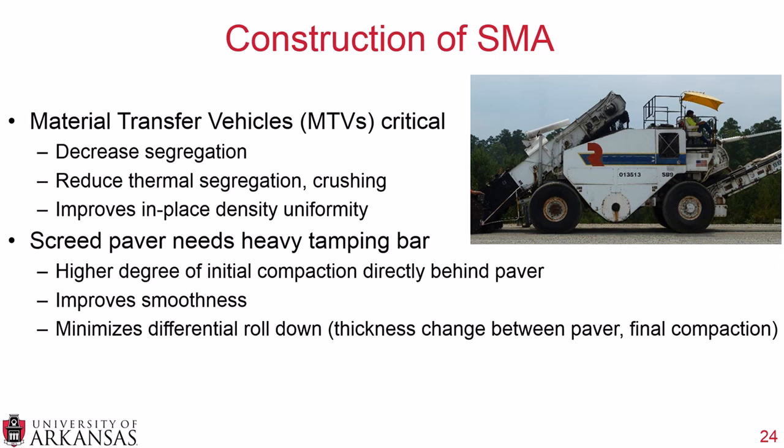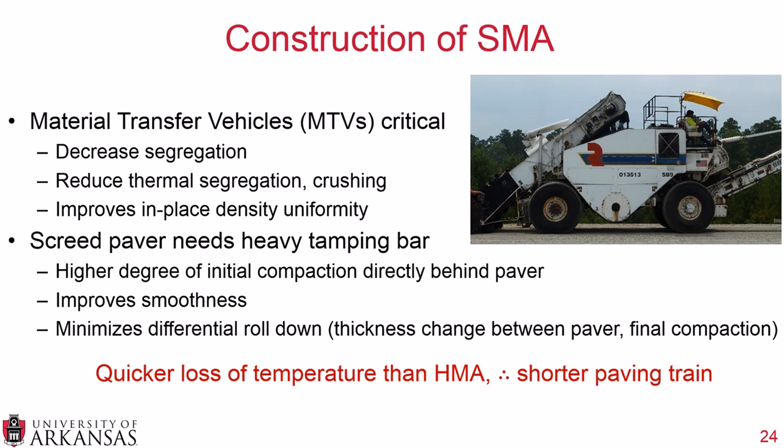Because of the coarse nature of SMA, there is a quicker loss of temperature than traditional asphalt concrete, so you have a shorter paving train. All best practices for traditional asphalt concrete apply, but you specifically want a material transfer vehicle, a tamping bar on the screed, and a minimized paving train length — with trucks delivering to the MTV, which places it in the paver, and rollers working as close behind the paver as possible to avoid the mat cooling too quickly before compaction.